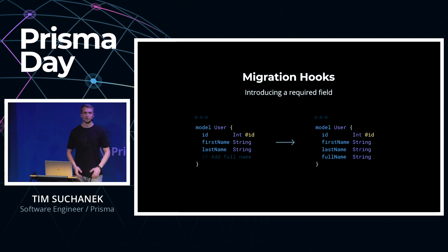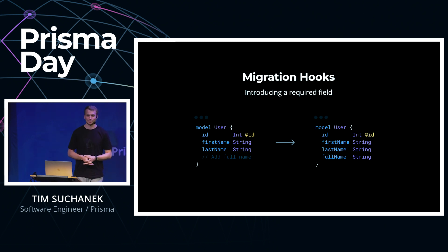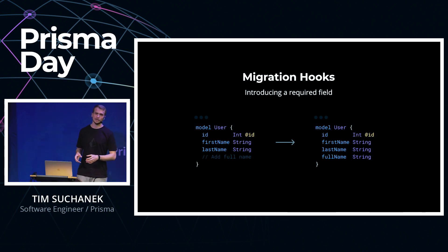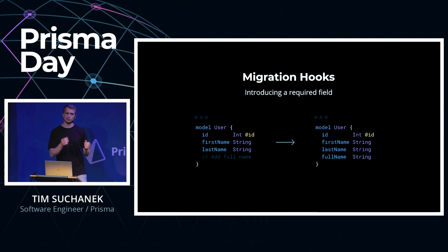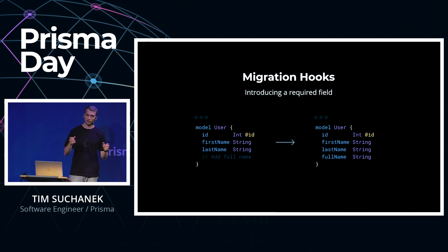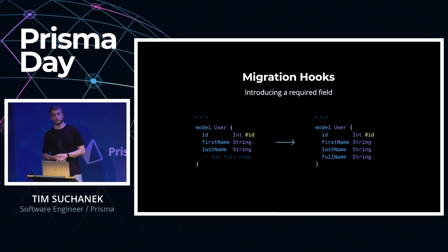One classic is introducing a required field. In this case, we have a first and a last name, and we want to have a full name that is just concatenated from these. How do we do that with Lift? We will do this in a two-step approach. We will first introduce the field optionally, update our data in the application, deploy everything, and the application already starts using the new field. Then in the second step, we will make it required.